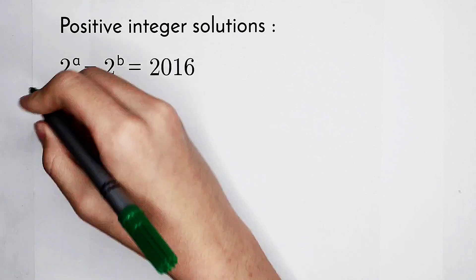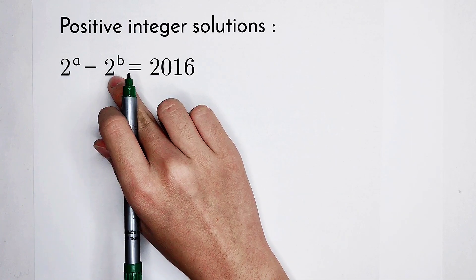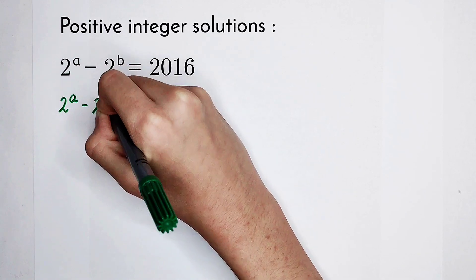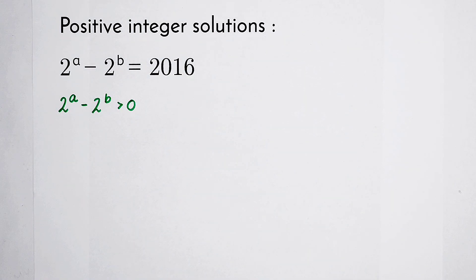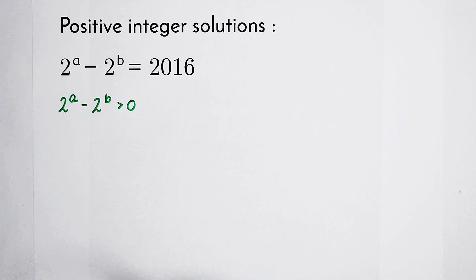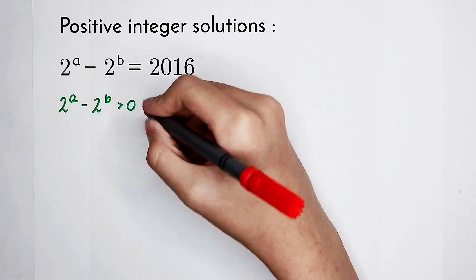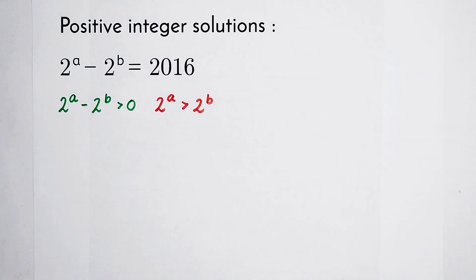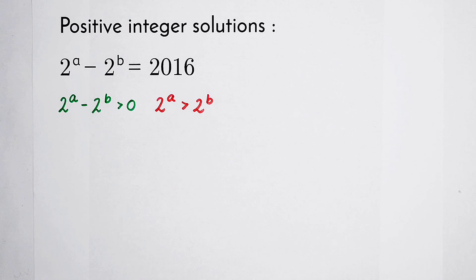Because 2 to the power of A minus 2 to the power of B is a positive integer, that means 2 to the power of A minus 2 to the power of B is greater than 0. This means 2 to the power of A is greater than 2 to the power of B, and therefore A is greater than B.